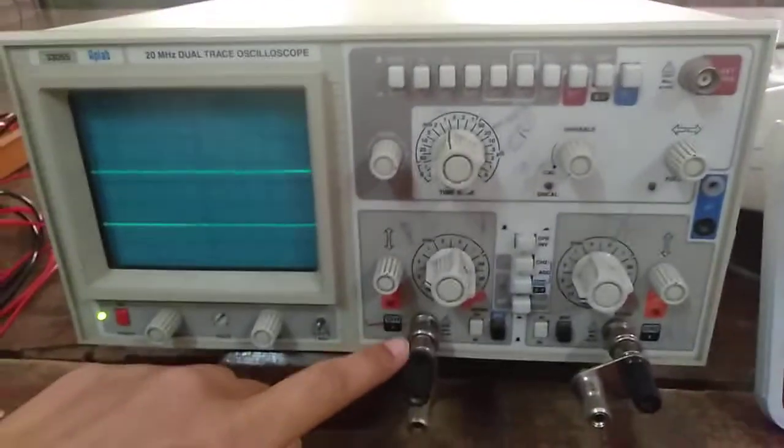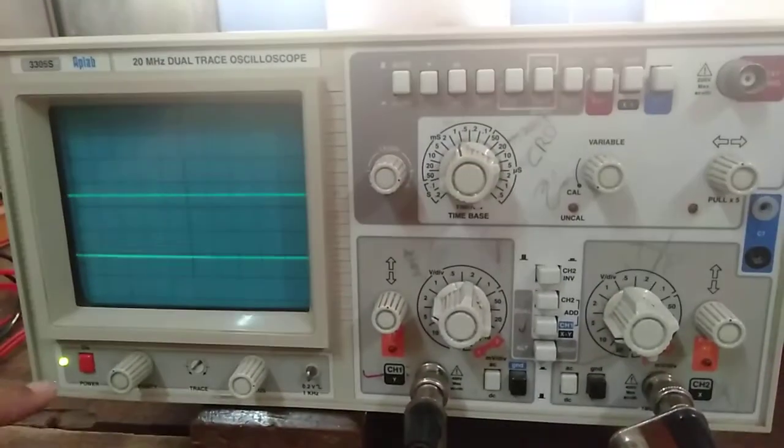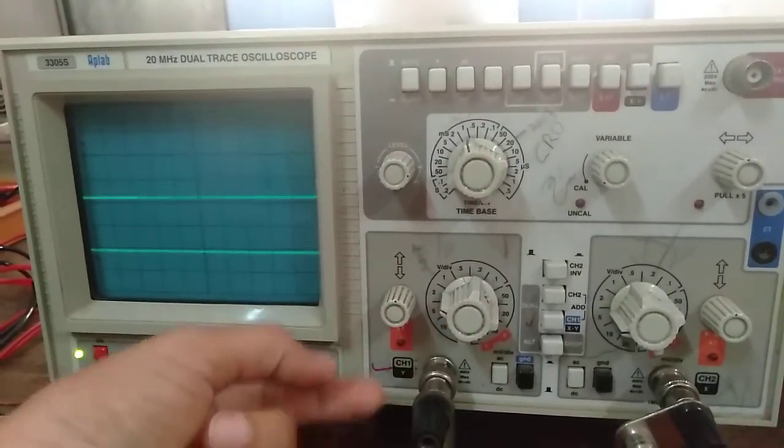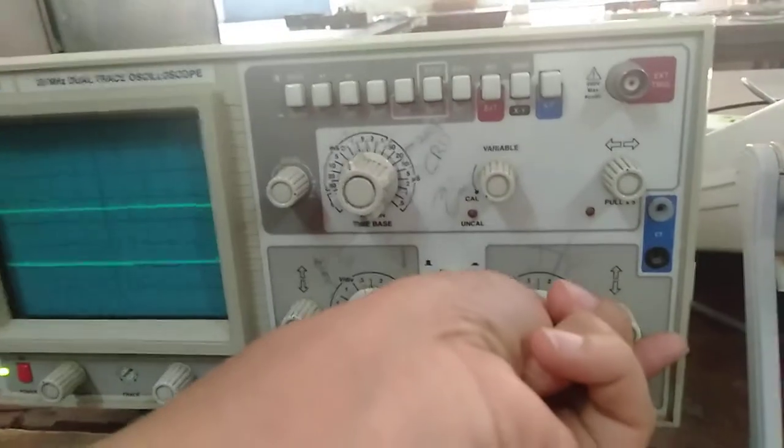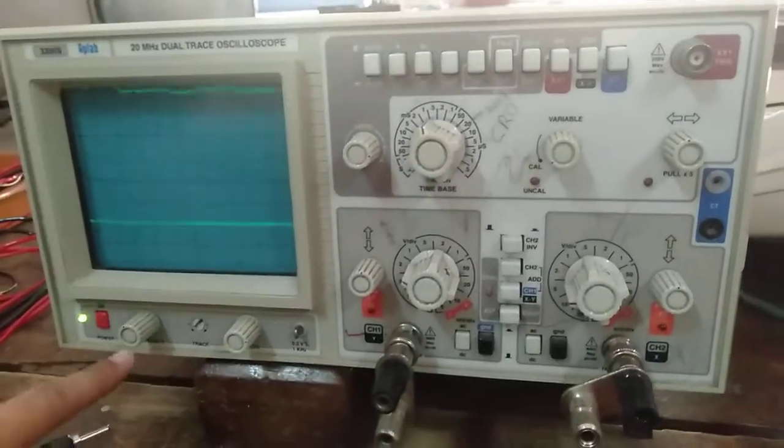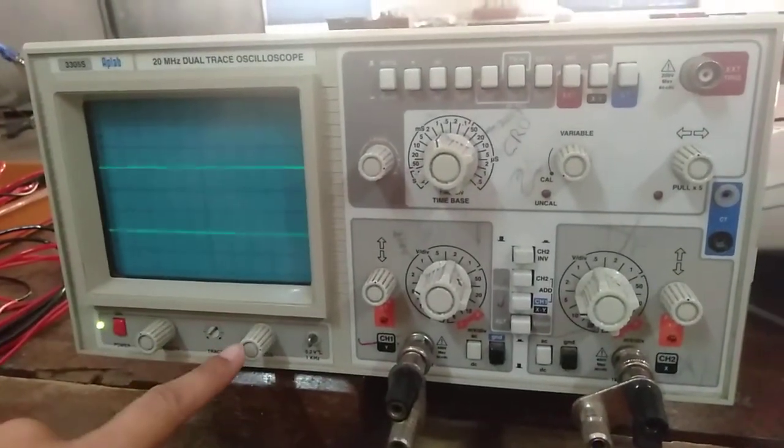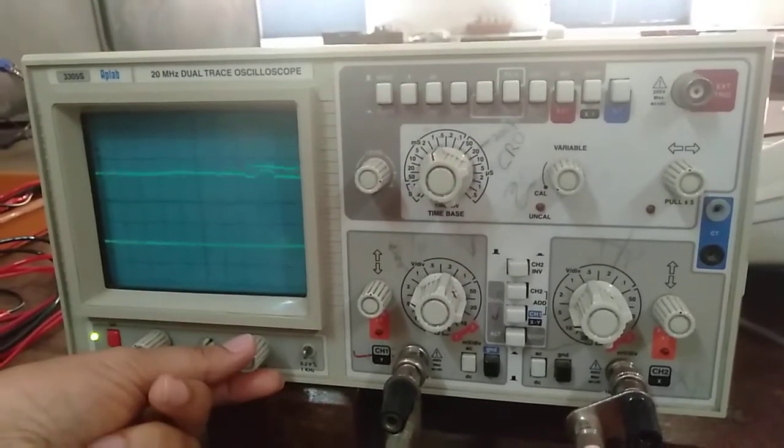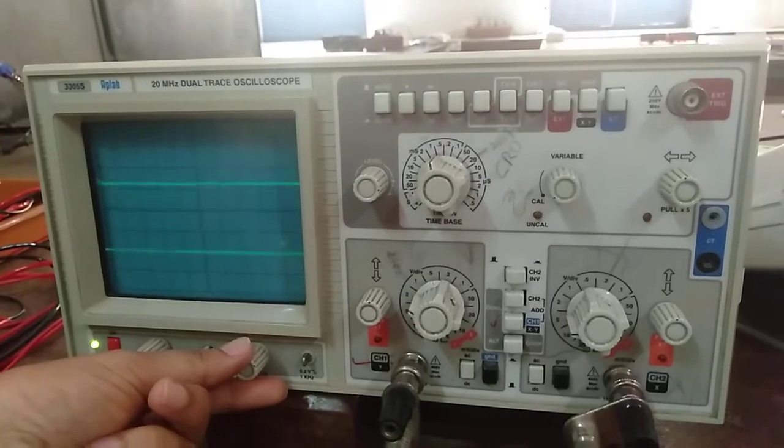Since we make use of channel X and channel Y in the CRO, we need to get two signals - one from channel Y and the other signal from channel X. You are supposed to make use of the intensity and focus knob and see that the intensity is maximum and focus is done properly.